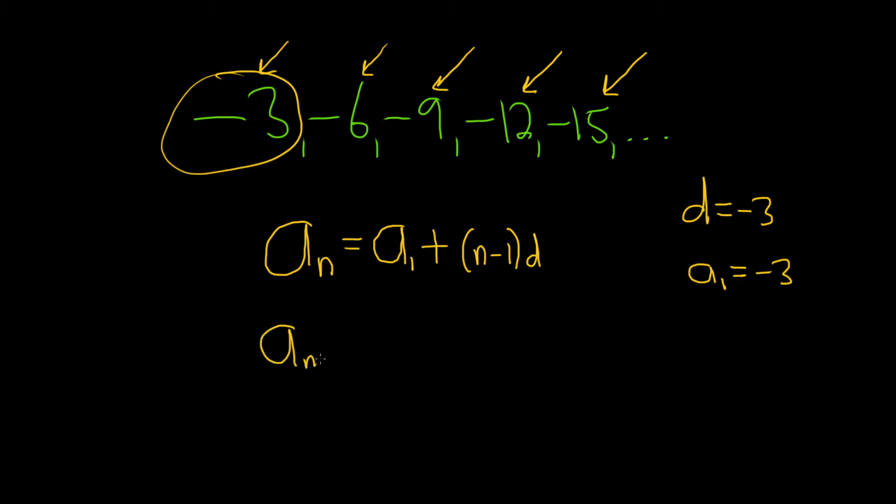So a sub n, a sub 1 is negative 3, plus parentheses n minus 1. And then d is also negative 3.